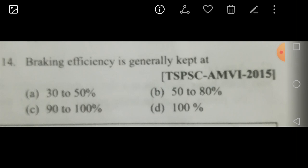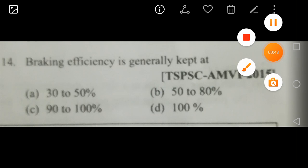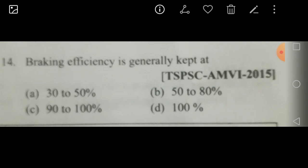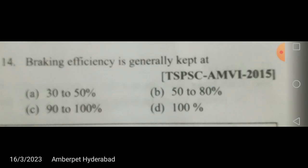Braking efficiency. The maximum retarding force applied by the brake at the wheels, F, depends on the coefficient of friction, denoted by mu. The coefficient of friction: mu equals F divided by R, or F equals mu times R, where R is the normal reaction and F is the frictional force. The ratio of frictional force to normal reaction is called the coefficient of friction, as we know from the fundamentals of friction.